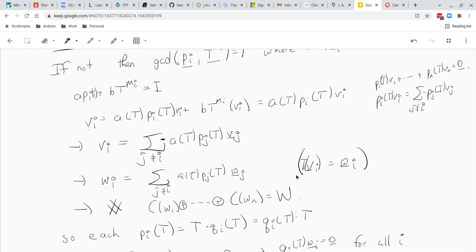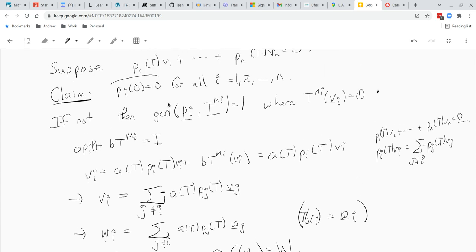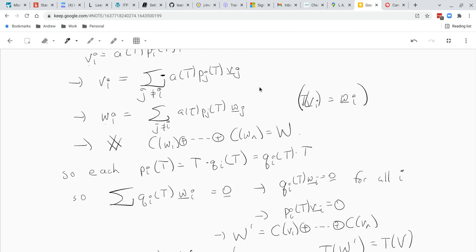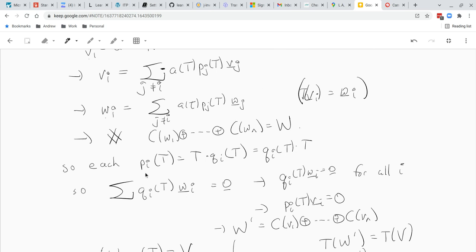And what's it a contradiction to? We assumed that Pi of zero is non-zero. Well, then Pi of zero must be zero for all i. So each term Pi has a factor of x. So then we can write Pi of T as just T times Qi of T.